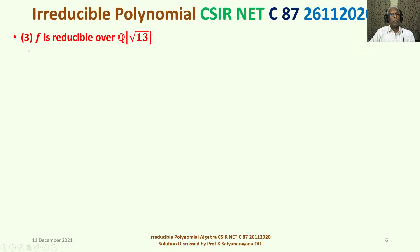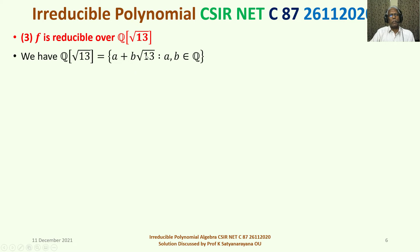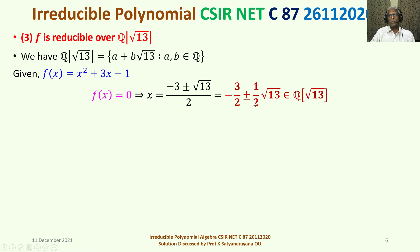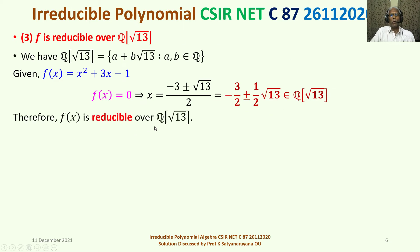Now consider the statement under Option 3: f is reducible over Q(√13). We have Q(√13) is the set of all elements of the form a + b√13, where a and b are elements of Q, the rational numbers, and it is an integral domain. Given f(x) = x² + 3x − 1, solving f(x) = 0 gives roots −3/2 ± (1/2)√13. Note that −3/2 ± (1/2) belong to Q, so these roots are elements of Q(√13). Therefore f(x) finds its roots in Q(√13), so f(x) is reducible over Q(√13). Thus Option 3 is true.